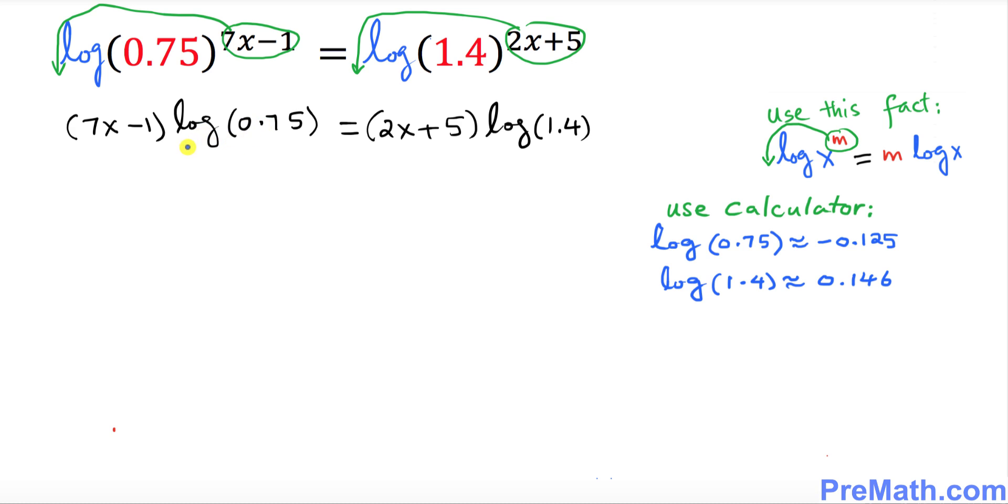Let's go ahead and plug it in. So log of 0.75 is negative 0.125 and on this side log of 1.4 is approximately equal to 0.146. Let's fill in the blanks. I'm gonna put down 7x minus 1 equals to 2x plus 5.